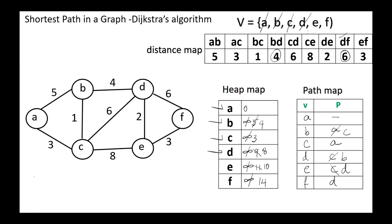Among the remaining vertices E and F, the vertex with minimum distance is E. We mark E as the current node. E is connected to C (visited), D (visited), and to F with distance 3: ten plus three equals 13, less than 14, so we update this value to 13. We update the parent of F; now the parent of F is E. E is not connected to other unvisited vertices, so we remove it and mark it as visited.